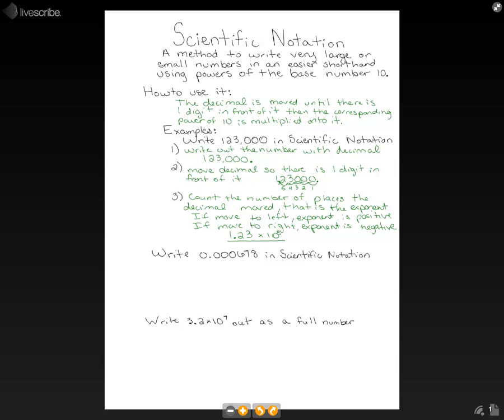Let's do another example. We're moving our decimal the opposite direction. We're going to write 0.000678 in scientific notation. Now, to follow the same steps. First we're going to rewrite it with our decimal.